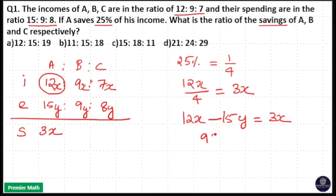Here 9x is equal to 15y. If I cancel with 3, that is 3x is equal to 5y. That means x by y is equal to 5 by 3.